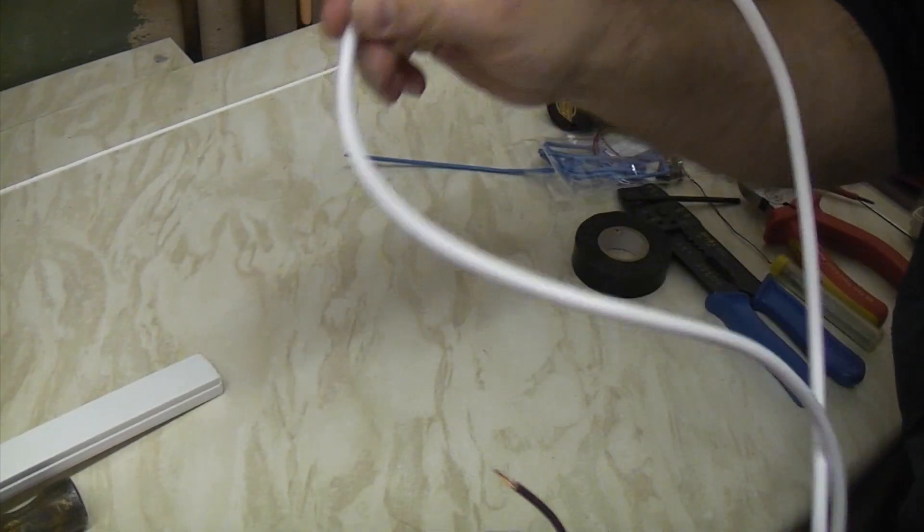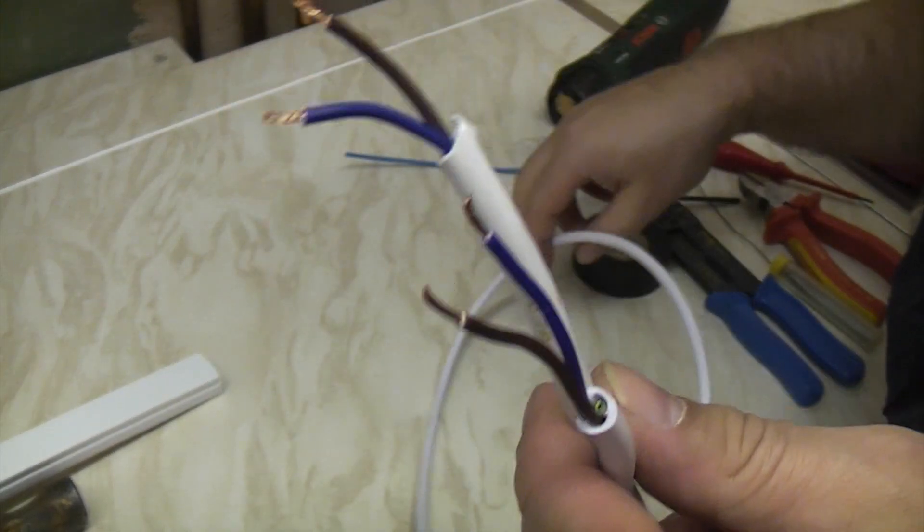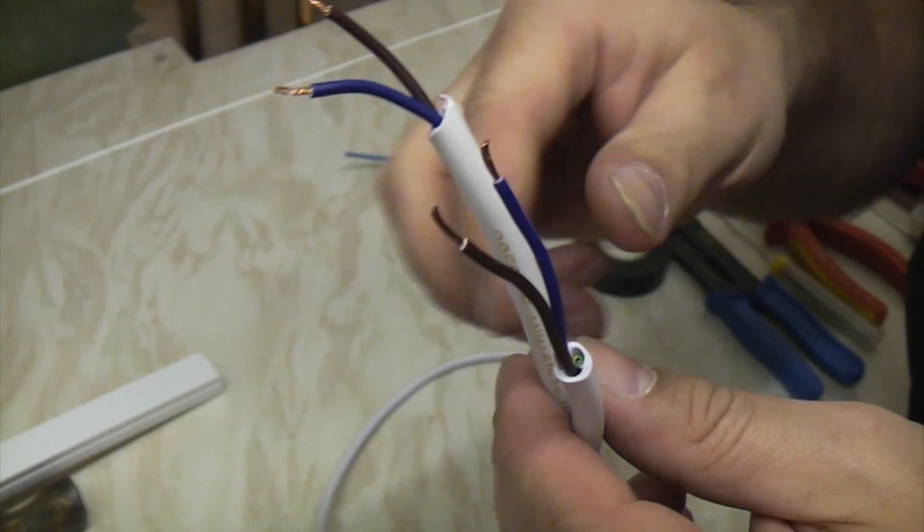So we have got two lengths of this heat resistant flex that we are going to be using to connect the boiler up to the wireless relay.